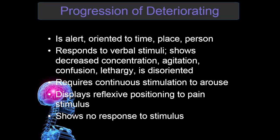Looking at the progression of deteriorating brain function: at first, the patient is alert and oriented to time, place, and person. As things progress, they respond to verbal stimuli, show decreased concentration, agitation, confusion, lethargy, and are usually very disoriented. They may have the presence of doll's eyes. Then it progresses to requiring continuous stimulation to arouse them; during this stage they can have decorticate posturing and Cheyne-Stokes respirations.